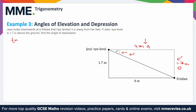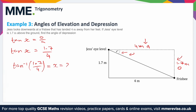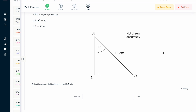We can use tan again because this is the opposite, this is the adjacent, and this is our angle. Tan(x) = opposite over adjacent. We don't know x, but the opposite is 1.7 and the adjacent is 4. So tan(x) = 1.7/4. We need to use the inverse tan function to find x, so x = tan⁻¹(1.7/4), which gives us x = 23.0 degrees.